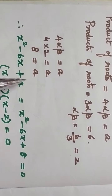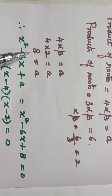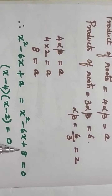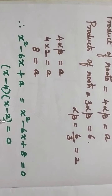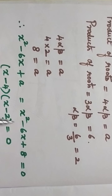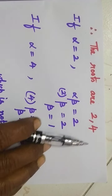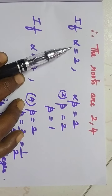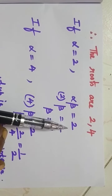So a equals 8. Substituting into the first equation x squared minus 6x plus 8 equals 0. We check: minus 4 and minus 2 multiply to plus 8, and minus 4 and minus 2 add to minus 6. So this factorizes as x minus 4 times x minus 2. The roots are 4 and 2.